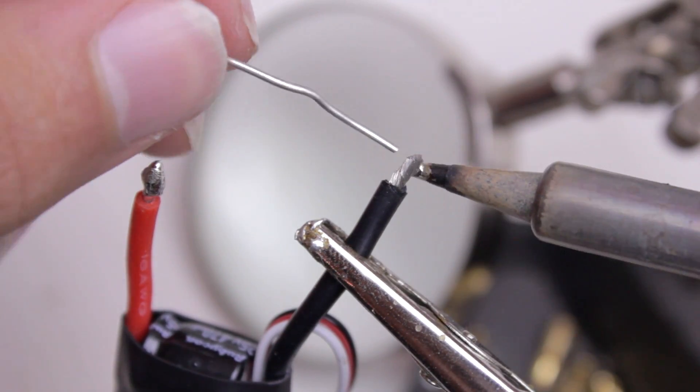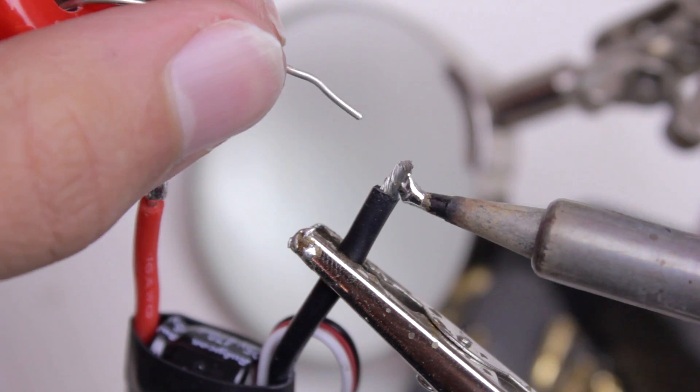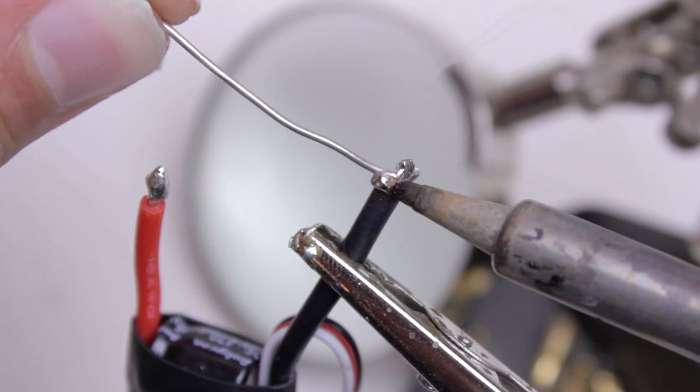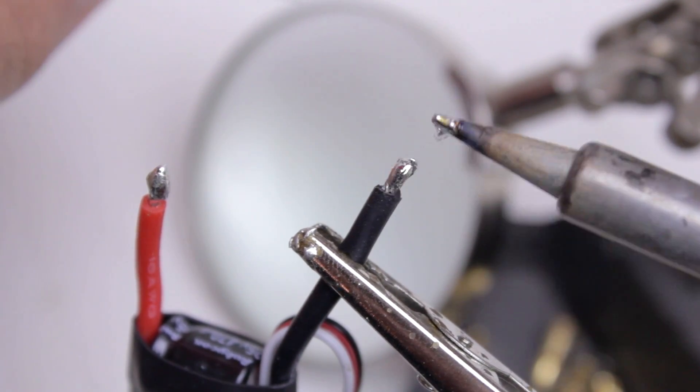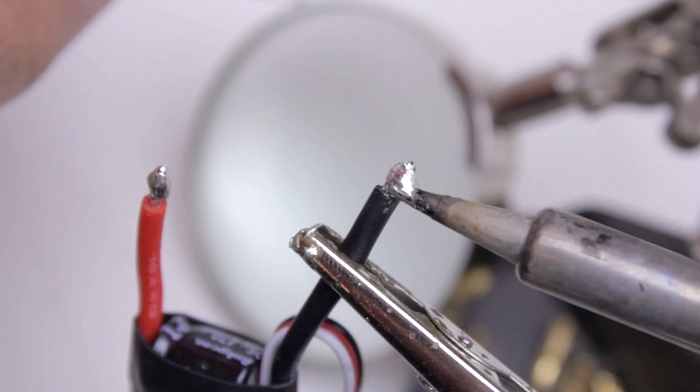It's a lot easier to tin your wire if you coat it in what's called flux, which is basically a fluid that allows the solder to stick to the wire better. But I don't have any of that so I'm not using it.